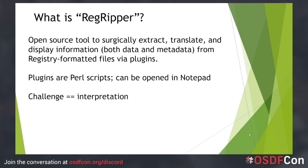RegRipper provides a framework for targeted extraction, translation, and display of this information. The tools rr.exe and rip.exe are simply intended to support running plugins — Perl scripts written to look for specific data within the registry. Importantly, RegRipper does not — I repeat, does not — automatically process transaction logs. It will tell you if the hive is dirty, meaning there is data in the transaction logs not yet written to the hive, but it will not process those logs automatically. Instead, if the analyst needs to process transaction logs, RegRipper provides recommendations for tools that can be used.